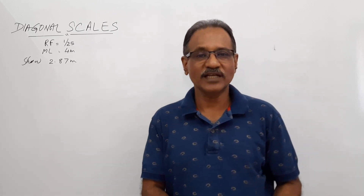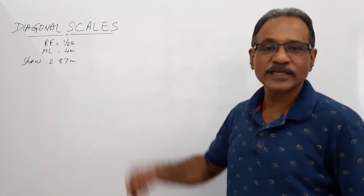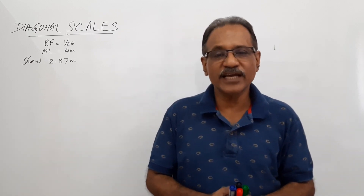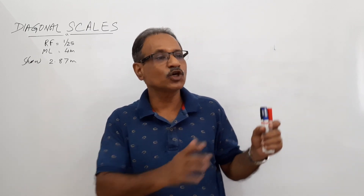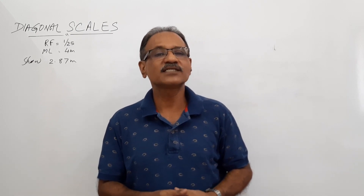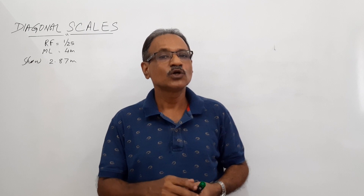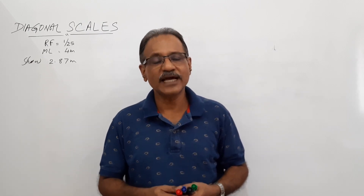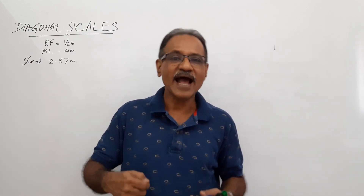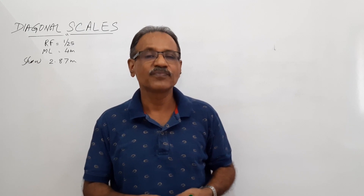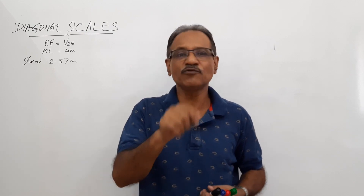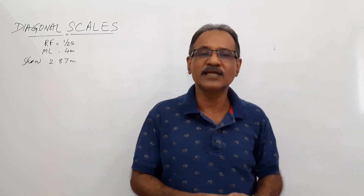Hi students, welcome to Engineering Graphics. We are going to see diagonal scales in this video. When you compare plain scales and diagonal scales: in a plain scale you show one main unit on the right side and its subdivision on the left side. Whereas in a diagonal scale you show one more unit — one main unit, its subdivision on the left side, and its subdivision again on a vertical scale. The accuracy of a diagonal scale is more.